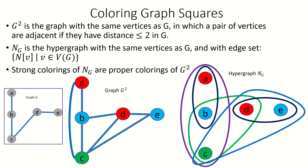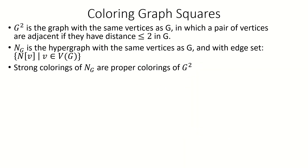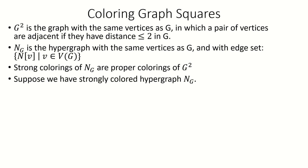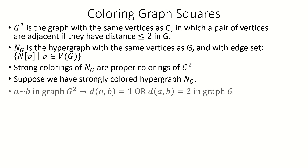To show this, suppose we have a strong coloring of N sub G. If two vertices A and B are adjacent in the square of G, then in G they were at distance two or distance one.